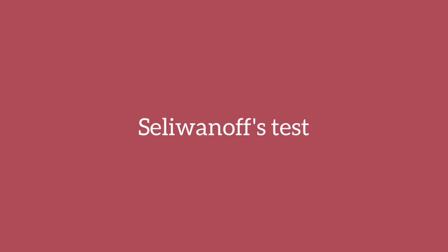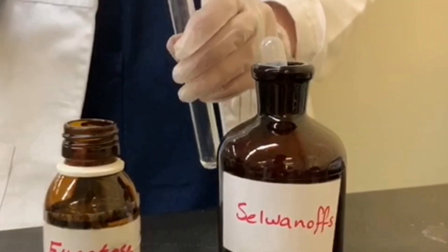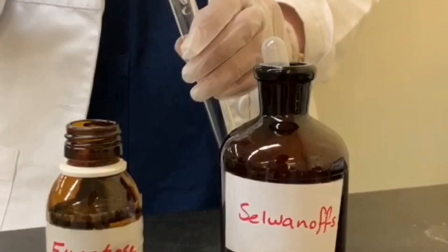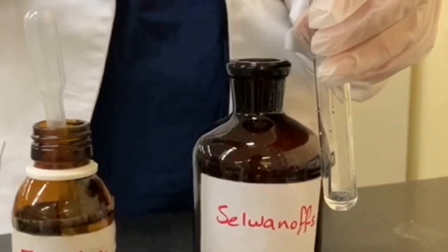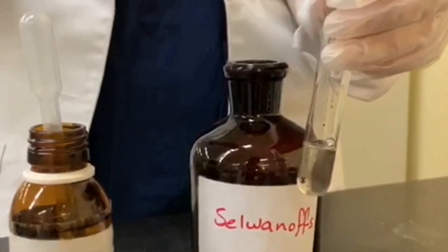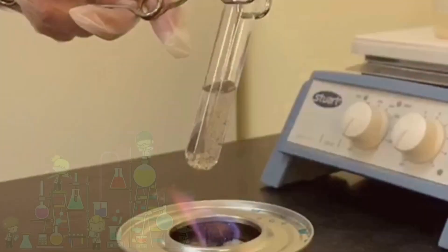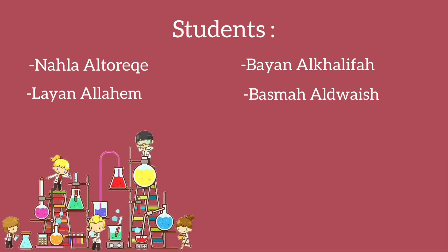Moving on to Seliwanoff's test, which aims to identify if the monosaccharide sugar is a ketose or an aldose. You will need Seliwanoff's reagent as well as a monosaccharide sugar like glucose or fructose. In this case, we used fructose, which is a ketose. Add two drops of fructose to two mils of Seliwanoff's reagent. After heating, the color of the solution will turn into a deep red color, indicating that fructose is a ketose. We also tried with glucose, which is an aldose — it turned out to be light pink. Thank you for watching; we hope this video helped you.